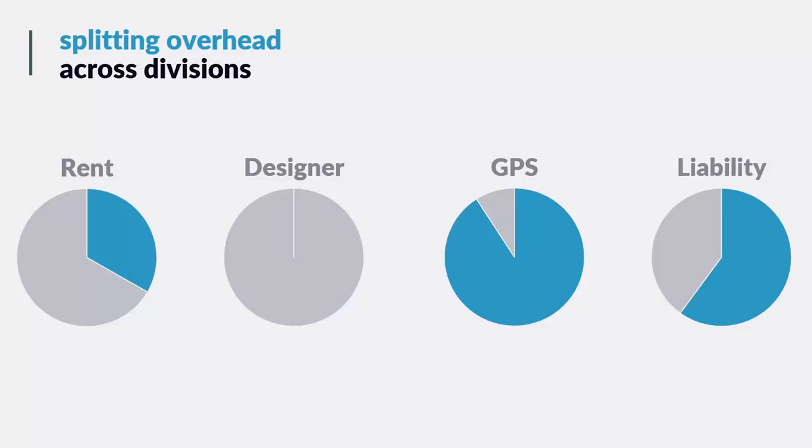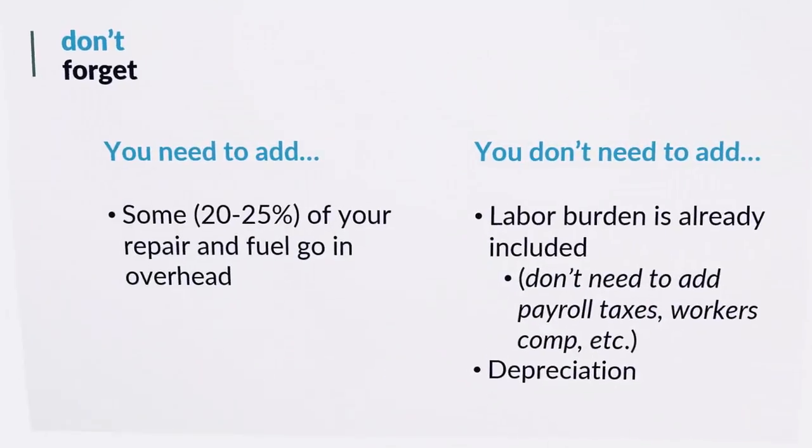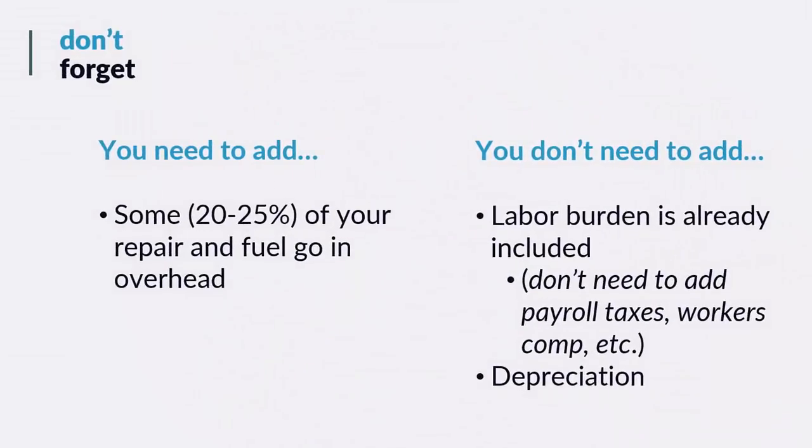There are a few important things to remember when building your snow overhead budget. First, make sure repairs and fuel are included. Remember from the equipment budget, about 75 to 80% of your fuel goes to equipment, but some 20 to 25% would probably go to your overhead vehicles and equipment. Don't forget that when building your snow overhead budget you didn't put all of your fuel and repairs in your equipment budget — you backed it down to roughly 20 to 25%. So you need to add repair and fuel in overhead as well to cover the cost for overhead trucks and equipment.